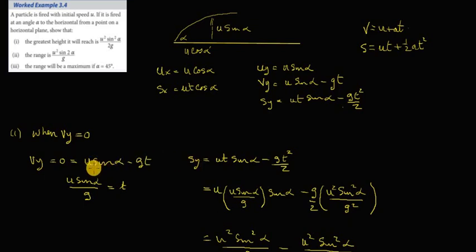So v y has to be equal to 0, so u sine alpha minus g t equals 0, so u sine alpha minus g t equals 0. Rearrange to get t is equal to u sine alpha divided by gravity.